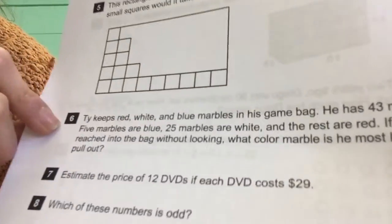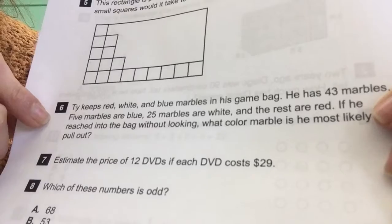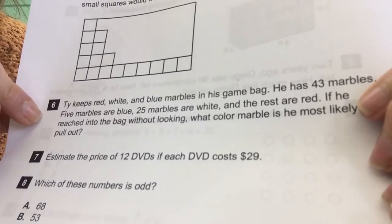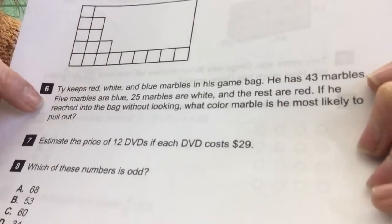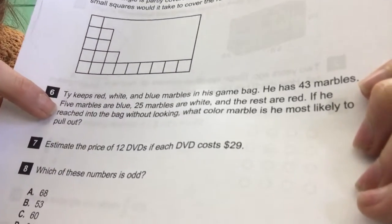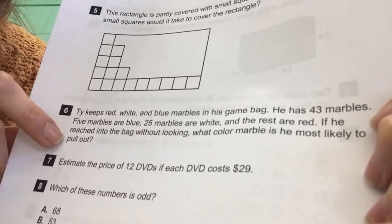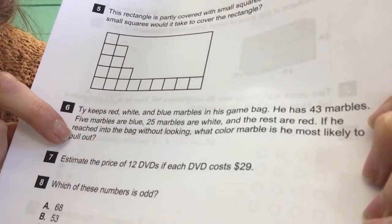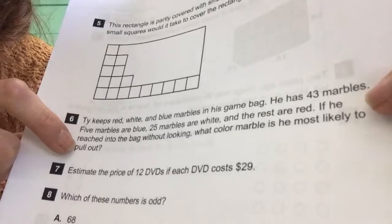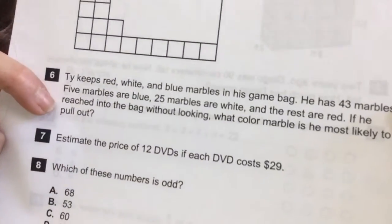Number six. Ty keeps red, blue, I'm sorry, Ty keeps red, white, and blue marbles in his game bag. He has 43 marbles. Five marbles are blue, 25 marbles are white, and the rest are red. If he reached into the bag without looking, what color marble is he most likely to pull out? Most likely.